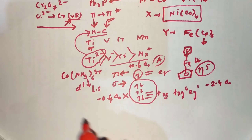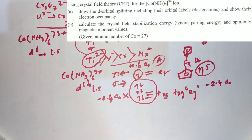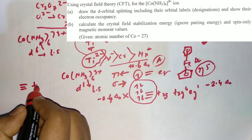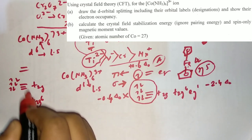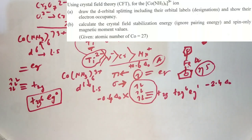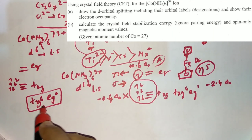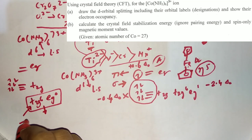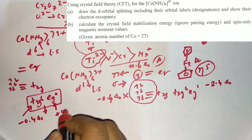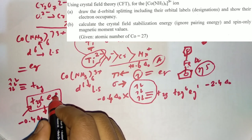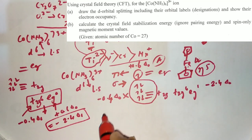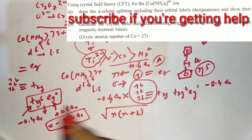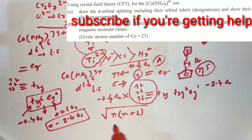The next question is about Co(NH3)6³⁺, a d⁶ low-spin system due to the strong field NH3 ligand. The electronic configuration is T2g⁶ Eg⁰. The CFSE value is 6 × (−0.4ΔO) = −2.4ΔO. To calculate the magnetic moment using the formula √(n(n+2)), where n is the number of unpaired electrons — here n = 0, so the magnetic moment is 0 BM (diamagnetic).